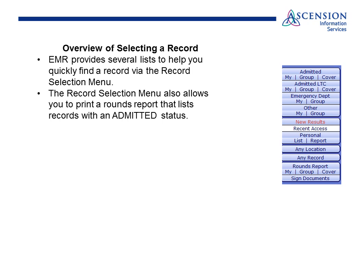Let's begin by reviewing how to find a patient record in the Meditech EMR. The EMR provides several lists to help you quickly find a patient record via the record selection menu. The record selection menu also allows you to print rounds reports that list your patient's records with an admitted status.